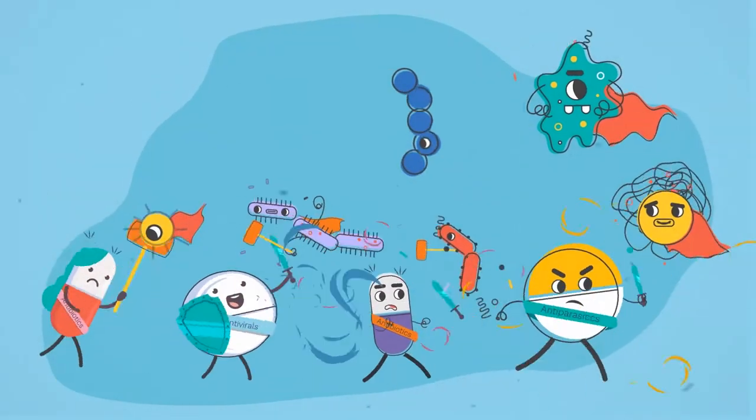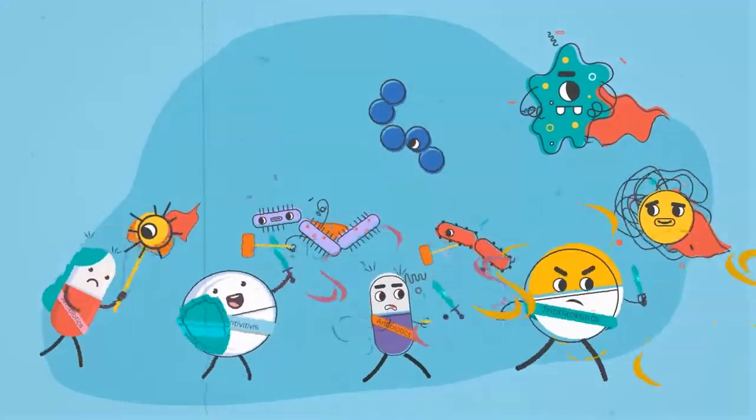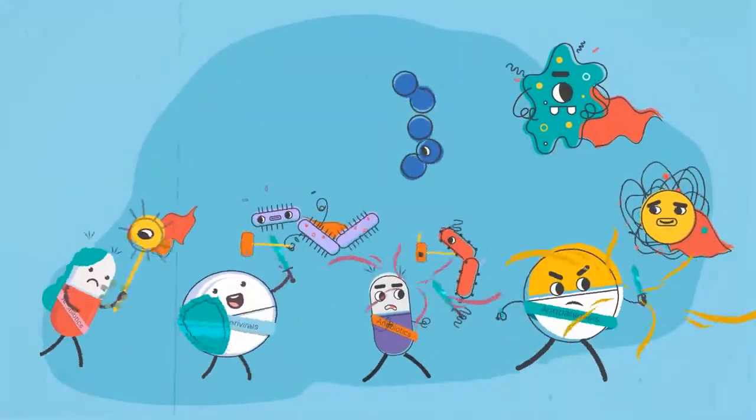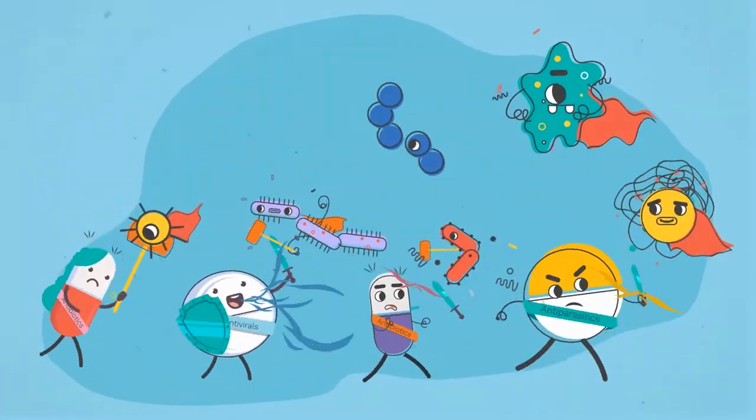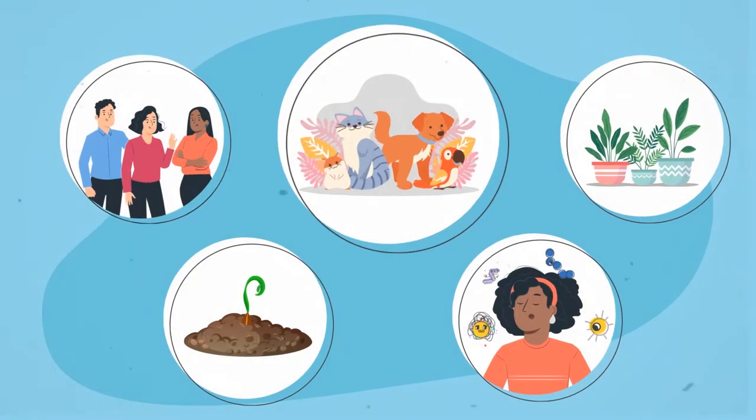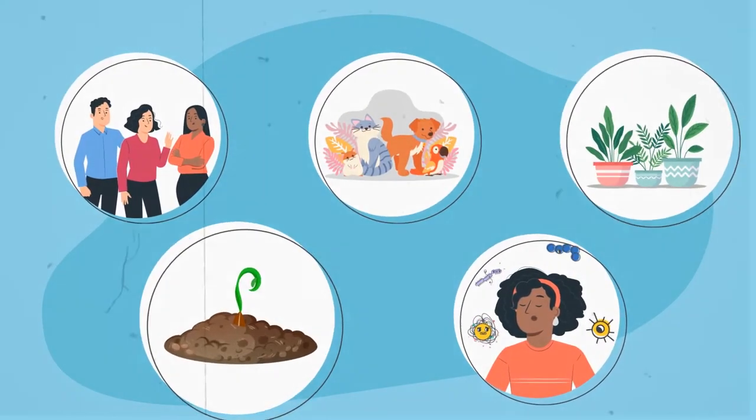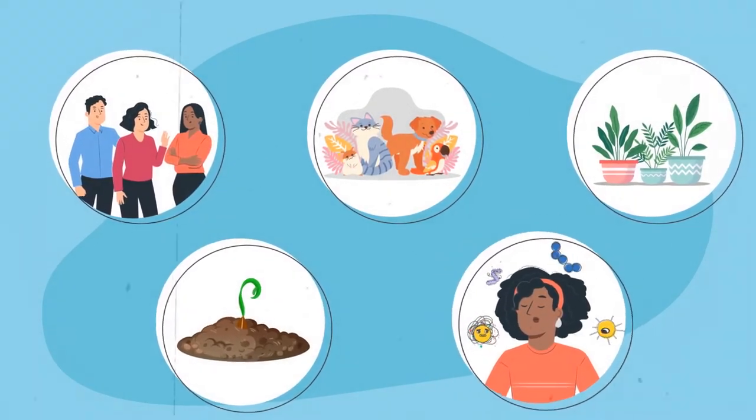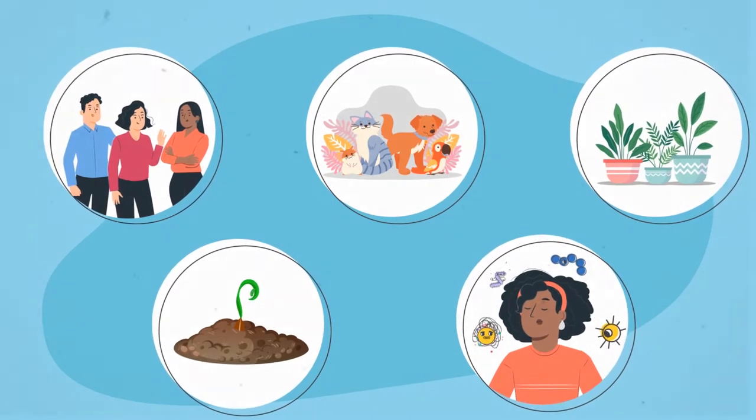But don't confuse them with superheroes—they're dangerous and need to be stopped. Antimicrobial resistant organisms can be found in people, animals, plants, and our environment, meaning water, soil, and even the air we breathe.